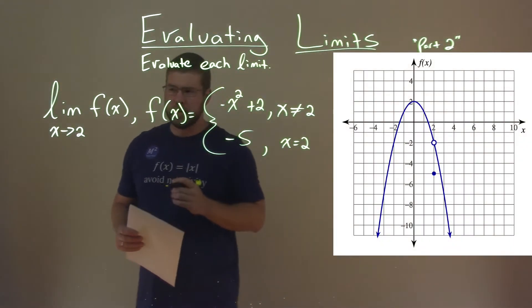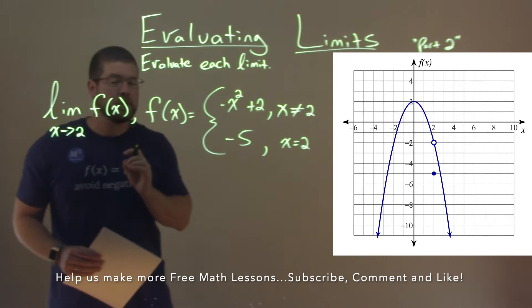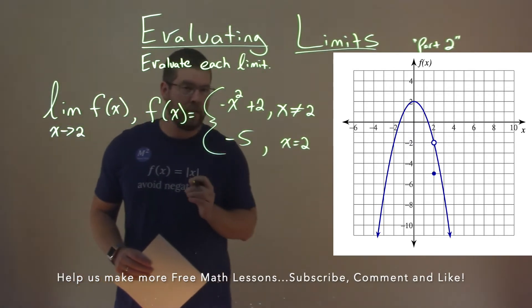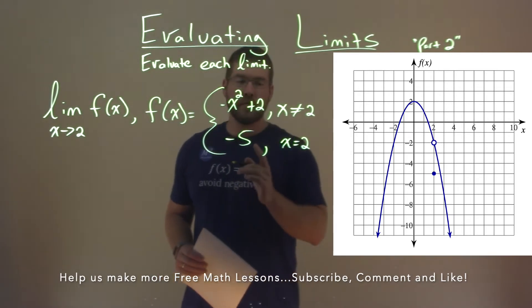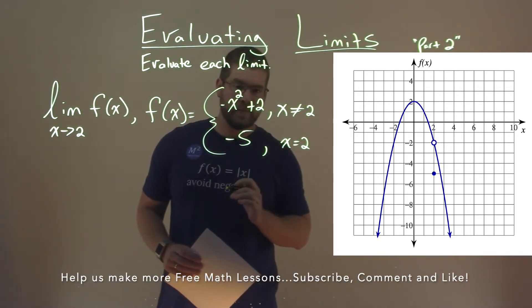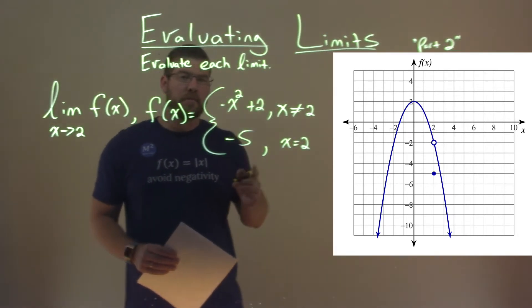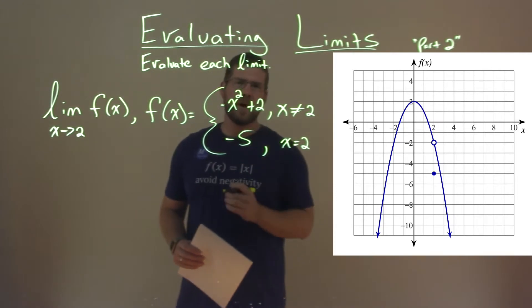We're given this problem right here. The limit as x approaches 2 of f of x, where f of x is equal to the piecewise function, negative x squared plus 2 when x is not equal to 2, and negative 5 when x is equal to 2. And we have to find this limit.